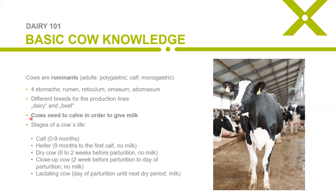Very important to know — and a lot of people don't — is that like for humans, a cow needs to calf in order to give milk. Without giving birth, the cow wouldn't yield any milk. Regarding the stages of a cow's life: from zero to nine months it's a calf; after nine months we call it a heifer — until the first calf, during which they give no milk.